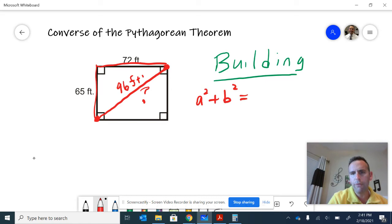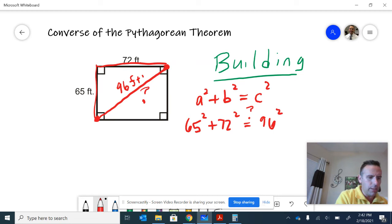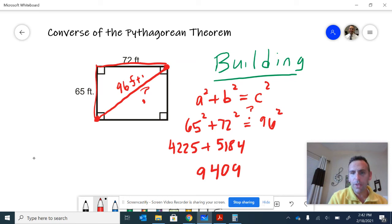So the legs would be 65 and 72 and the hypotenuse would be 96. So it's more like question mark rather than equals. Is it equal or not? Well, squaring 65, we get 4,225 and then squaring 72, we get 5,184 and then adding those together, we get 9,409. Then on the right hand side, just to check, we're going to do 96 squared and that will be 9,216.